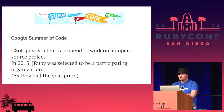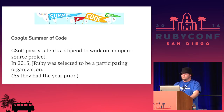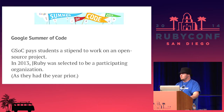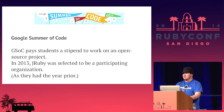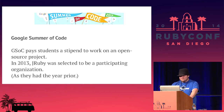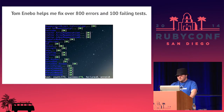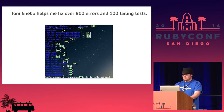I found out about a program called Google Summer of Code. It's a program Google does every year where they allow students to work on open source projects and pay them a really nice stipend over the summer. I found out that JRuby was going to be a participating organization, so I went to my local community college, signed up for a class so I would qualify, then applied for the program. That summer, Tom helped me fix over 800 errors and 100 failing tests. I learned a lot. We got everything working, and it was really awesome.